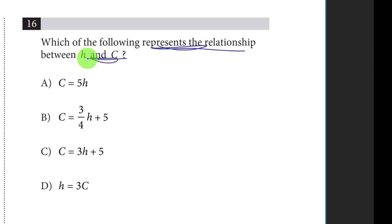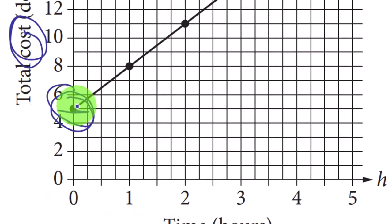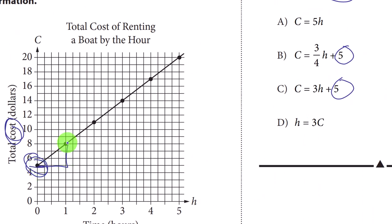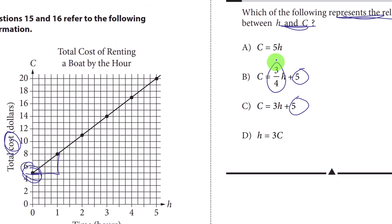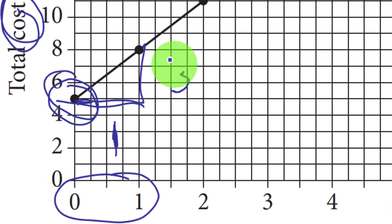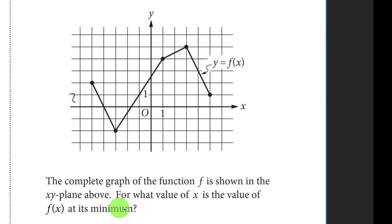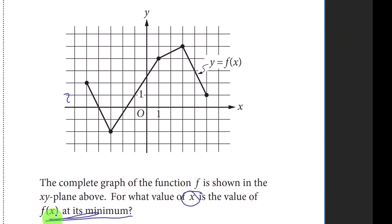Question sixteen: what represents the relationship between h and c? We know the y-intercept is 5. Many people look at the grid lines and think rise over run is three-fourths and choose B — but that's wrong. You have to use the actual axis values: it increases by one hour and goes up by three in cost, so the slope is 3. The answer is C.